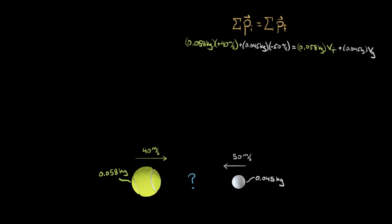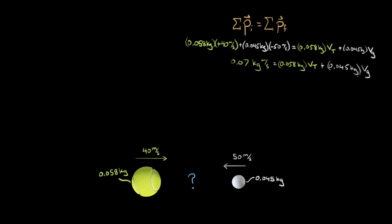Can we solve for the final velocities now? No — we have one equation with two unknowns: VT and VG. Adding up the left-hand side gives a total initial momentum of 0.07 kg·m/s, but we still have two unknowns on the right. We need at least one more piece of information — for instance, if we knew one of the final velocities, we could solve for the other.